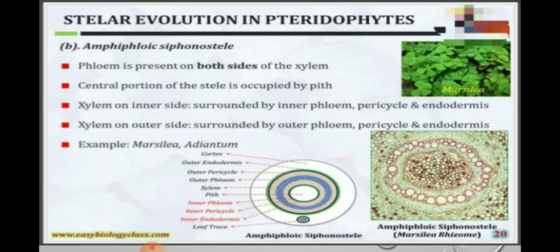The second is amphiphloic siphonostele. In this type, the pith is surrounded by the vascular tissue. The concentric inner phloem cylinder surrounds the central pith, and next to the inner phloem is the outer phloem cylinder. This type of stele is found in Marsilea.